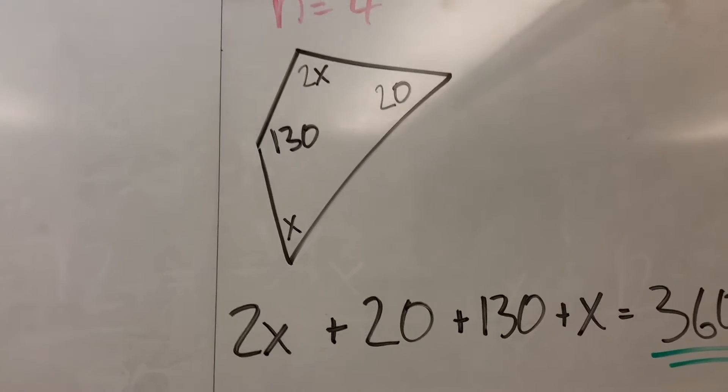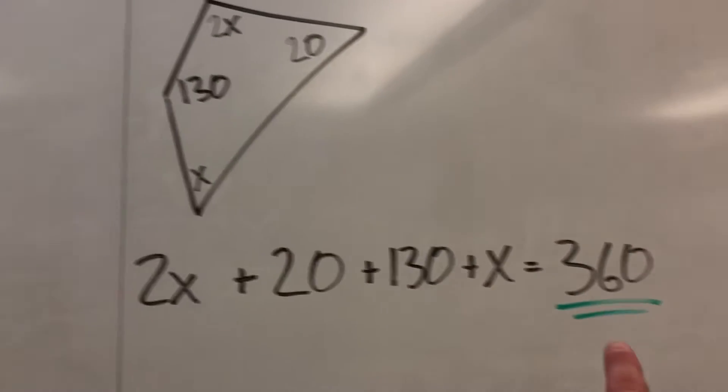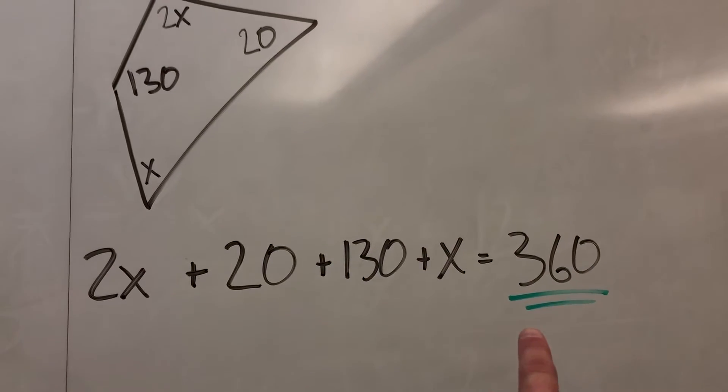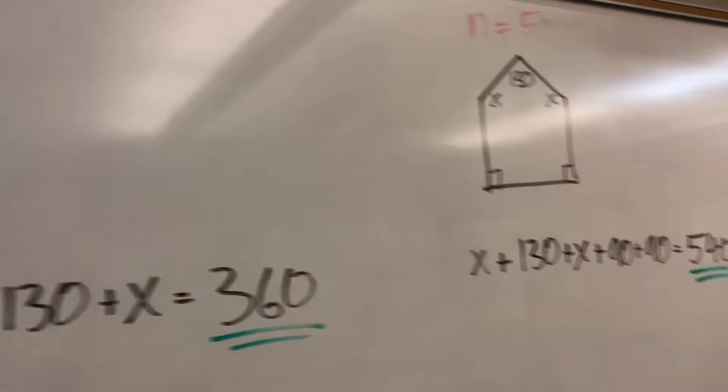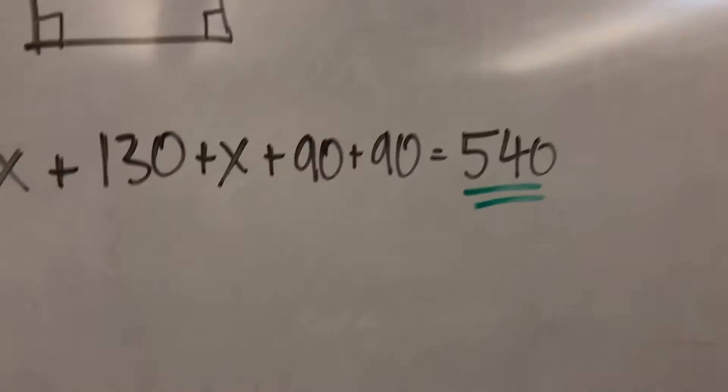Four-sided shape, the magical number is 360. For a five-sided shape, the magical number is 540.